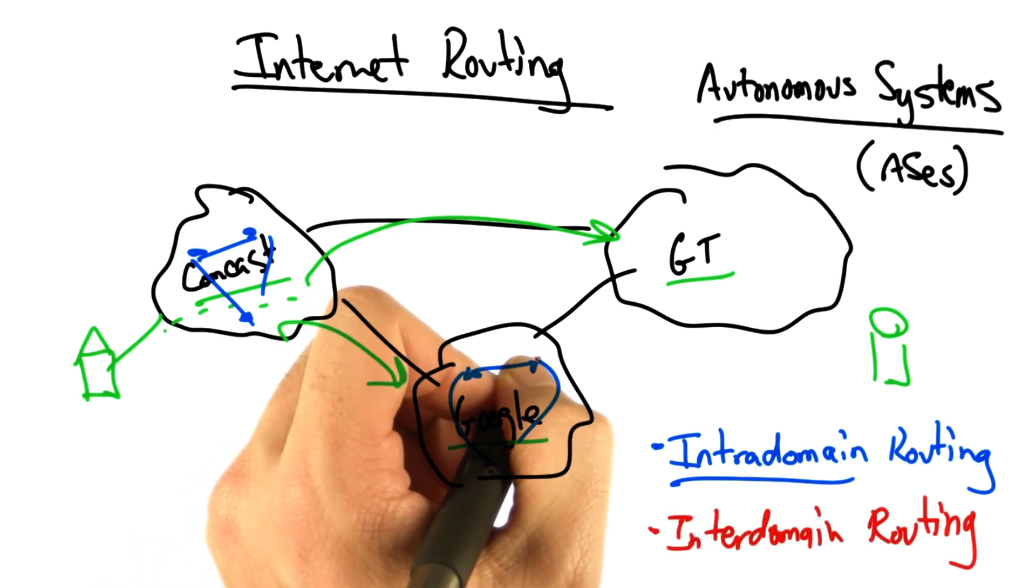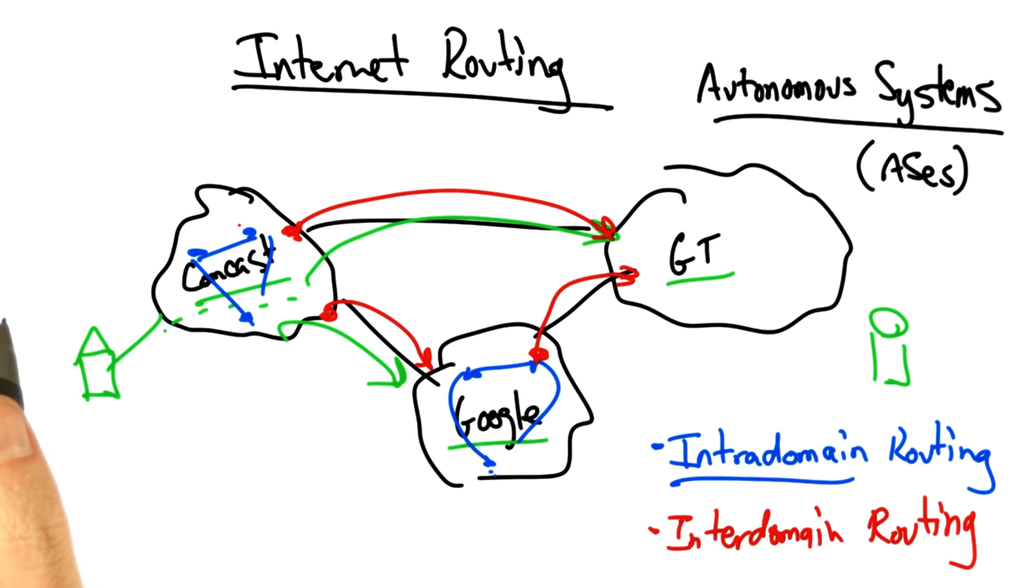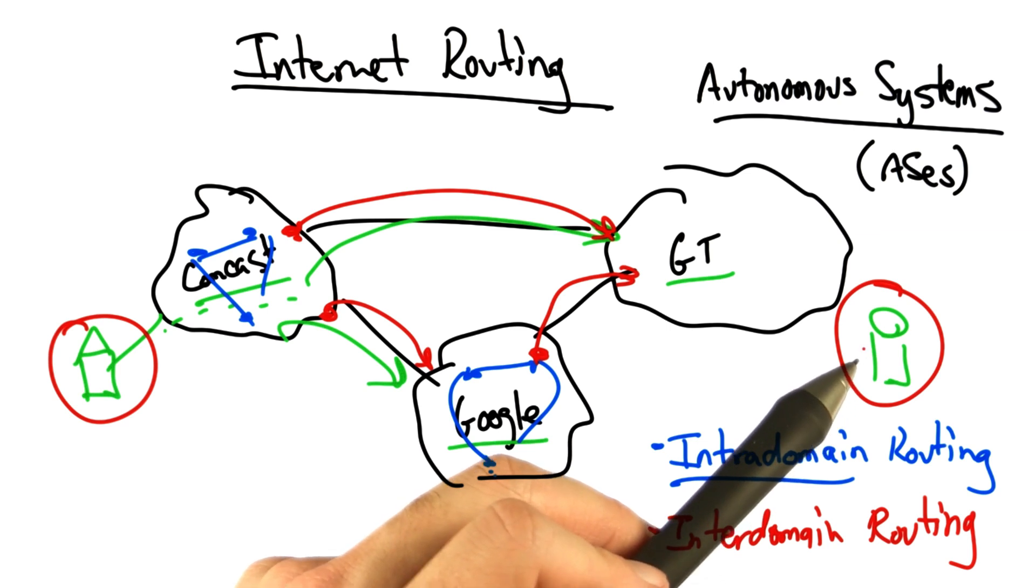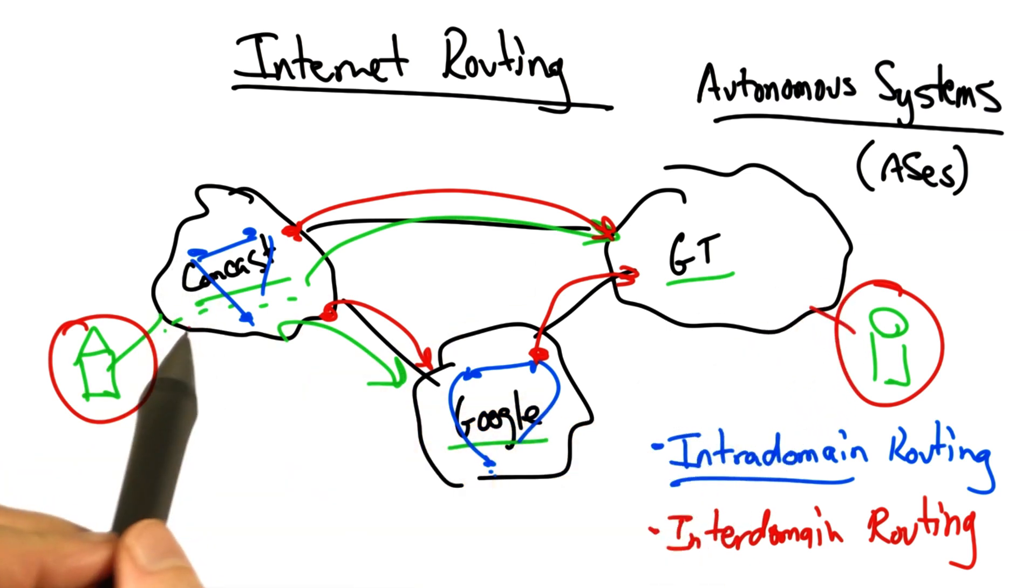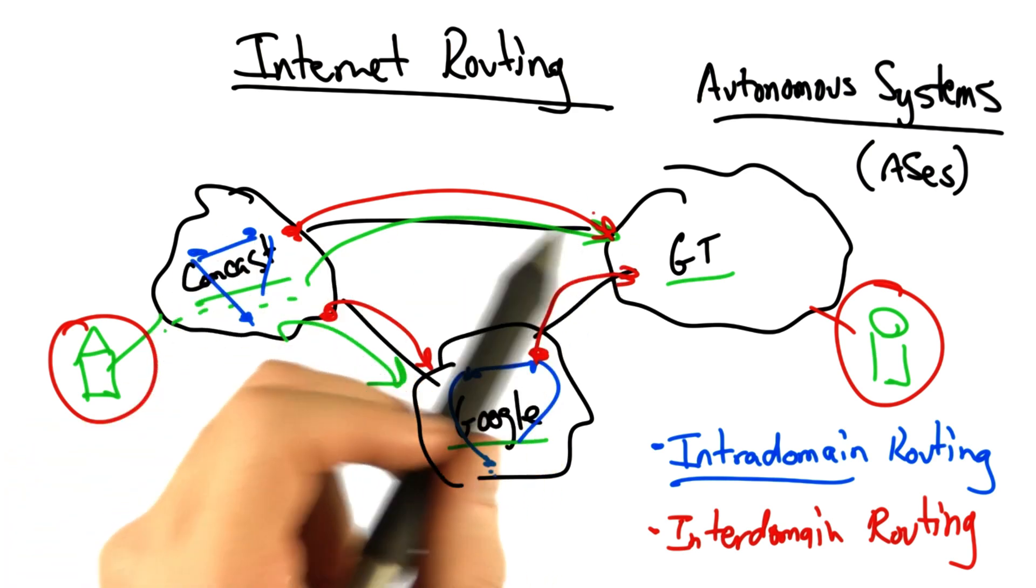The other is interdomain routing, which is the process of routing traffic between autonomous systems. So computing a path between a node in an ISP like Comcast and another node in a network like Georgia Tech's involves computation of both intradomain paths and interdomain paths.